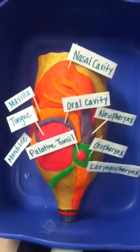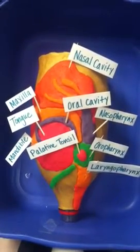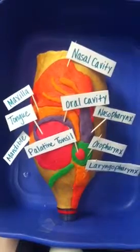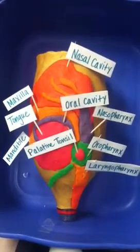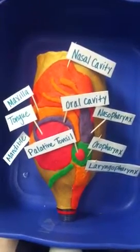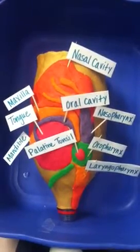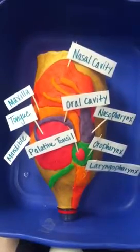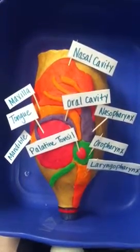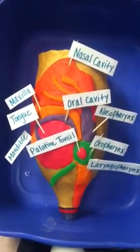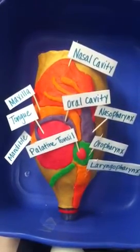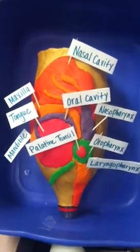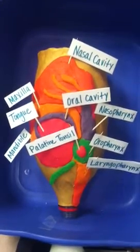The articulatory system is the process of bringing mobile and immobile articulators together for the purpose of forming speech sounds. The vocal tract can be thought of as a series of linked tubes. It is comprised of the oral cavity, the nasal cavity, and the pharynx.